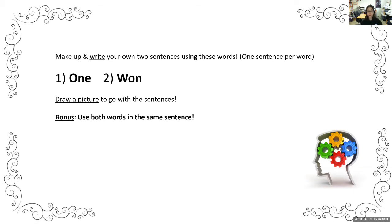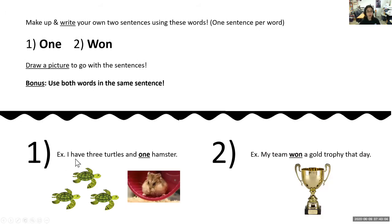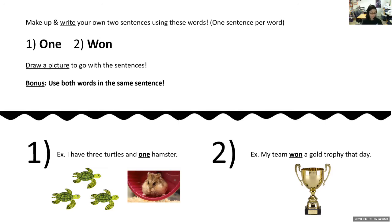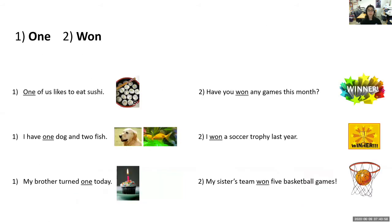For example, you could say 'I have three turtles and one hamster' — that's the number one, spelled o-n-e. We wouldn't say w-o-n because that's about winning something. For won, meaning winning, we could say 'My team won a gold trophy that day' — we wouldn't spell it o-n-e because that's the number. Now come up with your own sentences using one and won, and draw a picture. Pause the video and do that.